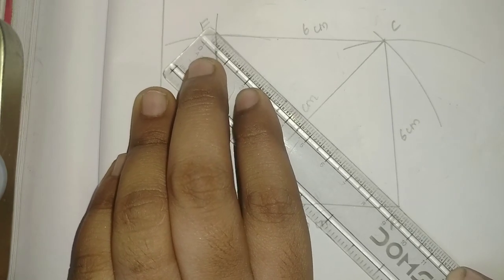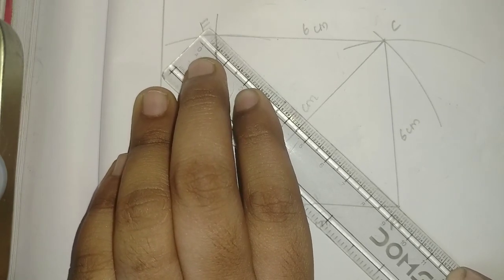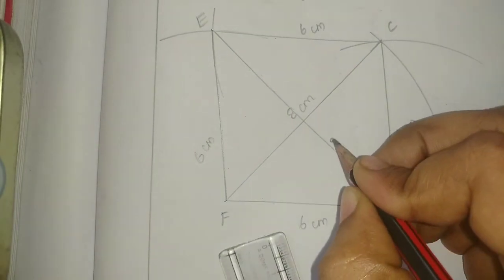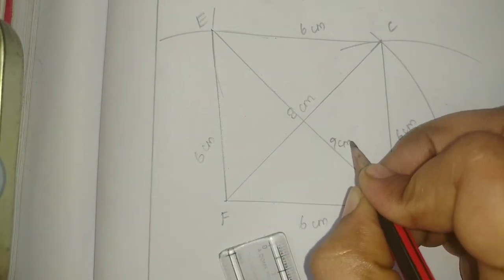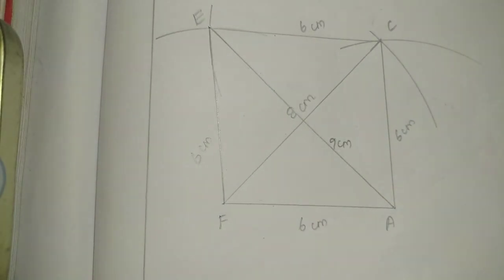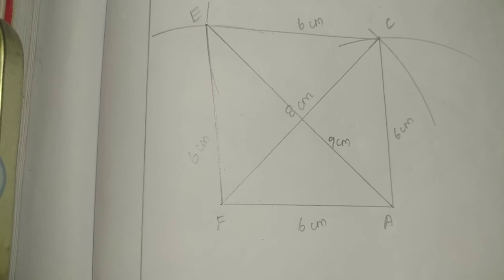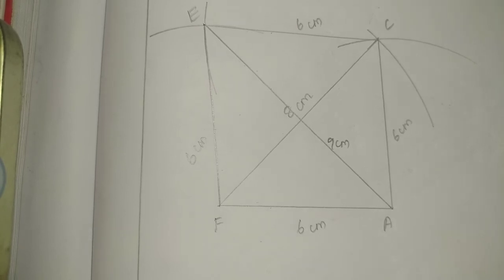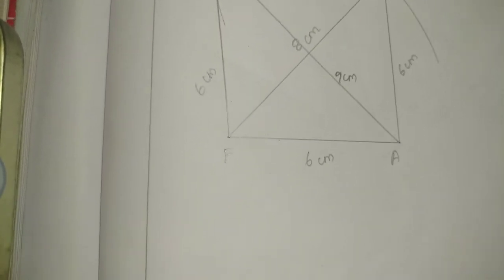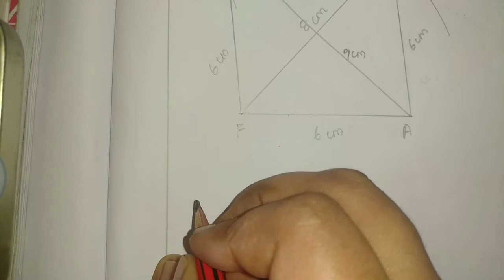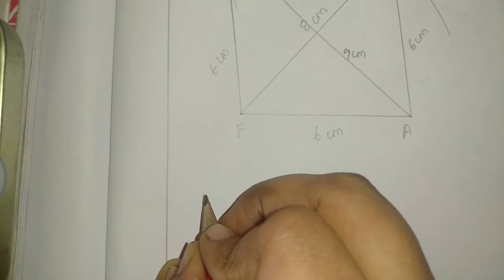So E is marked and FACE is the rhombus. This is the present diagram. Now I will apply the formula. The area of the rhombus — what is the formula? Area of rhombus.